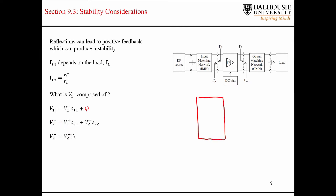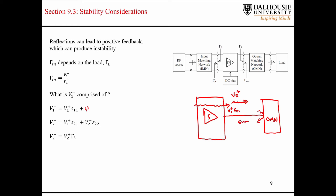On the output side — let me draw the amplifier a bit bigger — we have an output matching network. The forward traveling wave on the output side is going to be composed of the amount of the input traveling wave that gets transmitted through, so that's V1+ times the S21 parameter. But there's also going to be some mismatch at the output matching network, and some of that energy reflected back will also be reflected off the output side of the amplifier — that's the backwards traveling wave times S22. So the sum of these two terms gives the forward traveling wave.